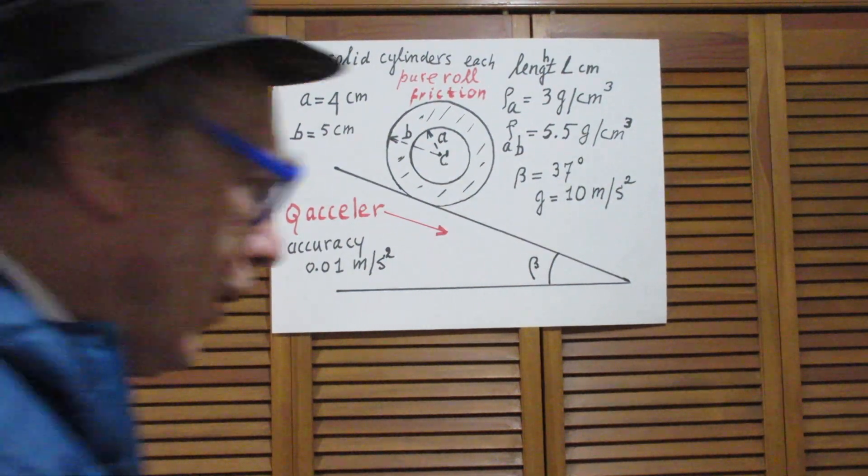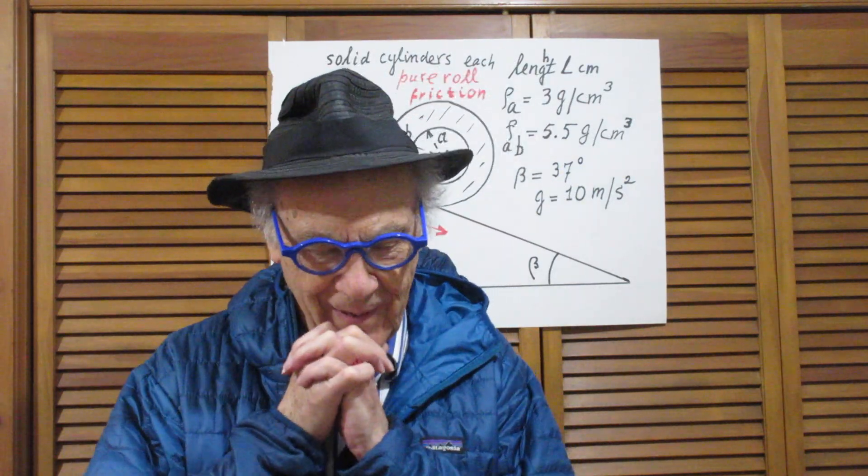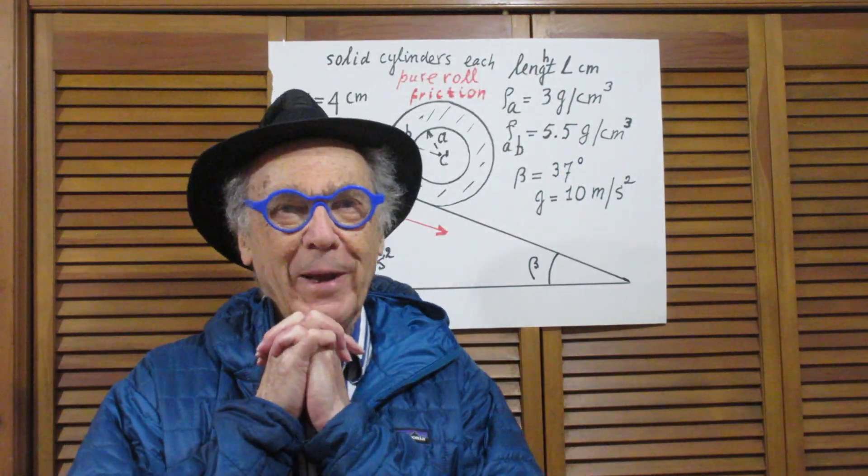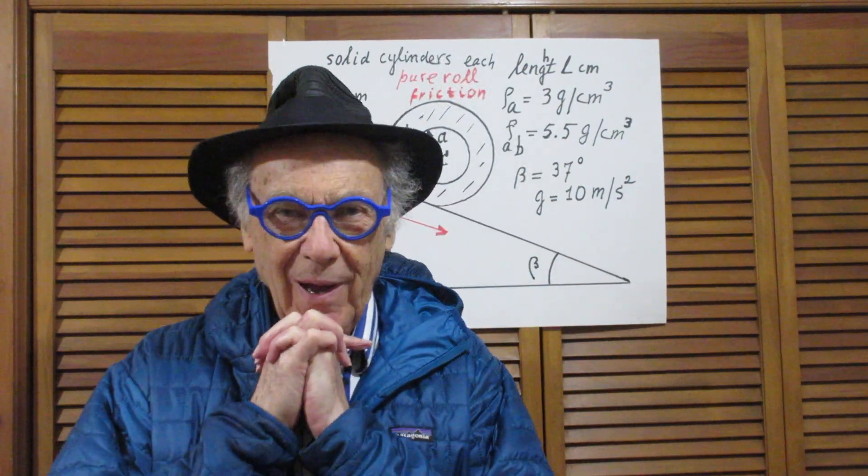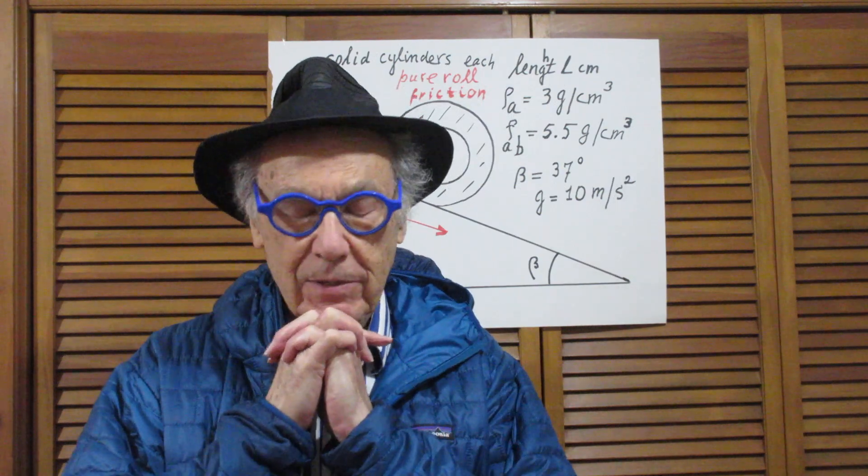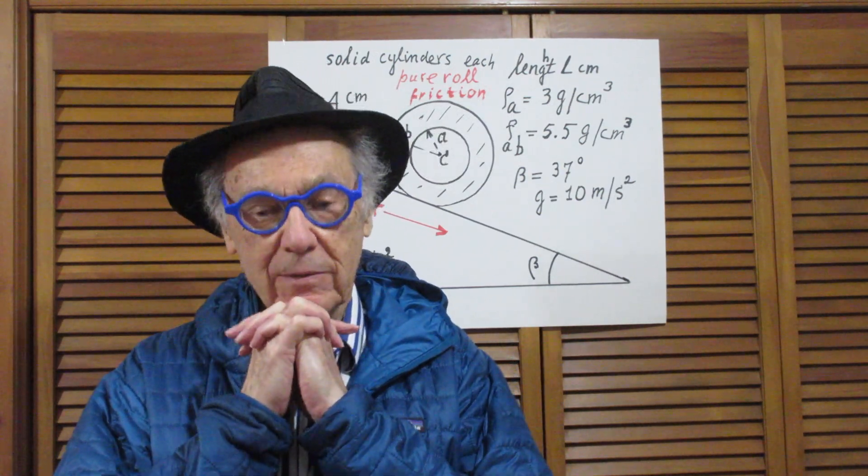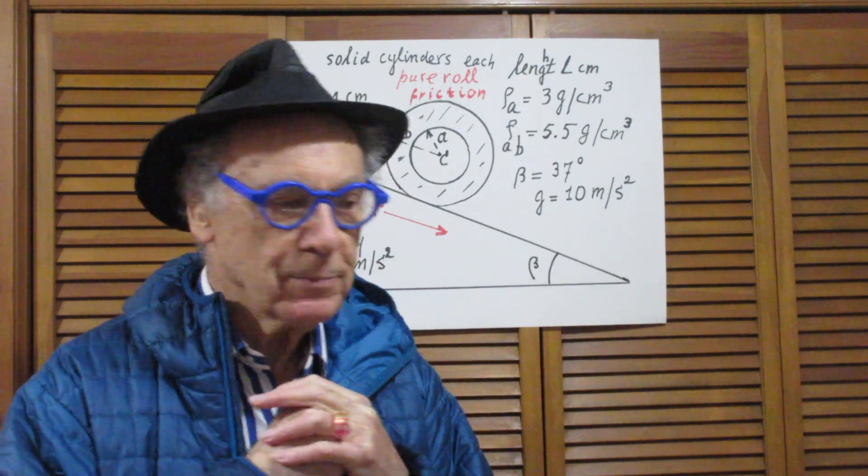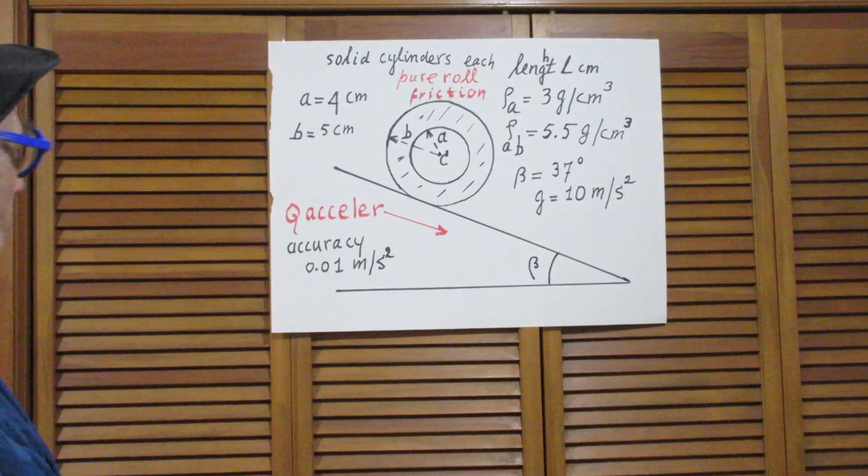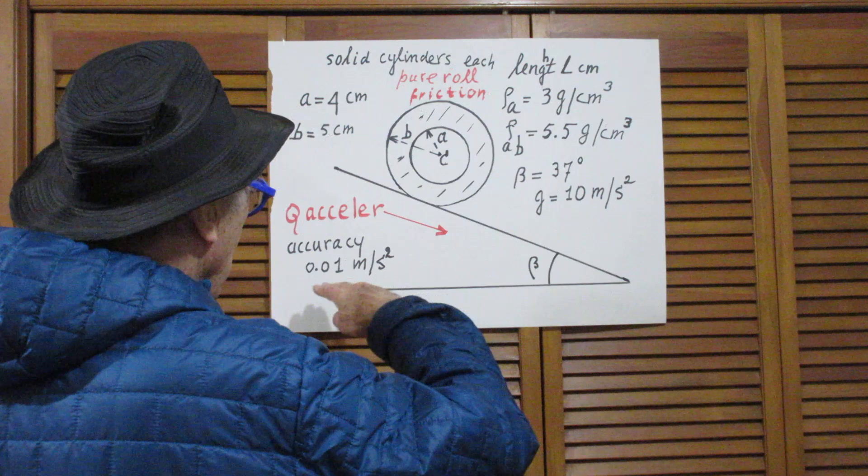Hello, so today I'm going to make it a little easy. I have a cylinder rolling down an incline. Let's take a look at my picture - this is the incline, this is the horizontal plane.